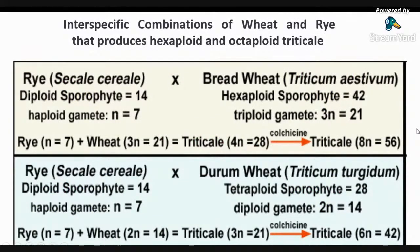These are the inter-specific combinations of wheat and rye that produce hexaploid and octaploid triticale. When Secale cereale, which has chromosome number 14, is crossed with Triticum aestivum, which has chromosome number 42, a tetraploid triticale is produced which is fully sterile; after colchicine treatment, chromosome number is doubled and an octaploid triticale is produced. Or when Secale cereale is crossed with durum wheat, Triticum durum, a triploid triticale is produced, which after colchicine treatment gives rise to hexaploid triticale.